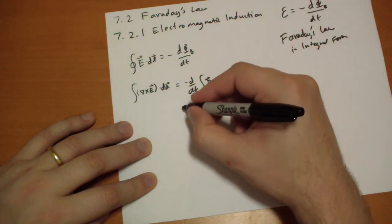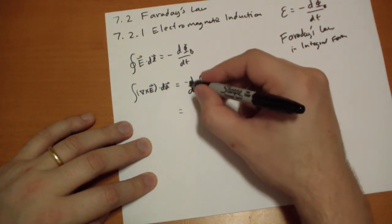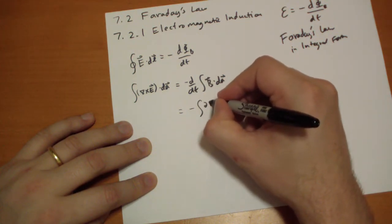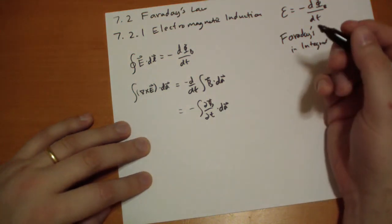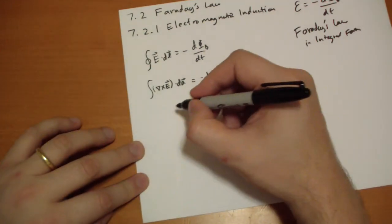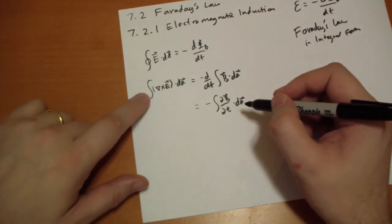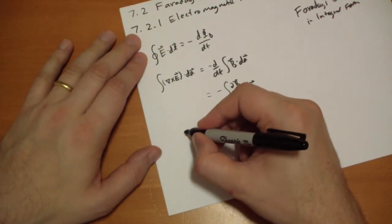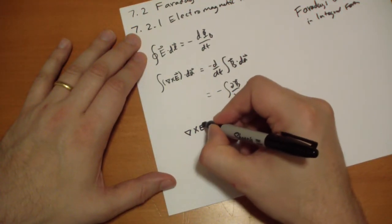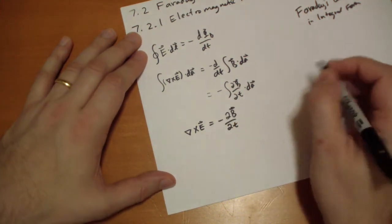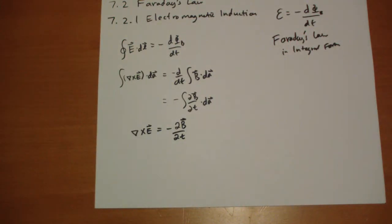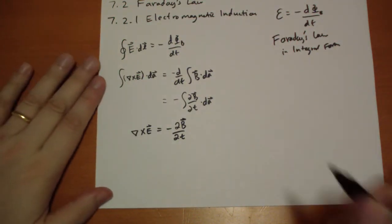Moving the time derivative inside, you get negative dB/dt dot DA vector. Now it's readily apparent that the curl of E equals negative the change in the magnetic field. This is Faraday's Law in differential form.